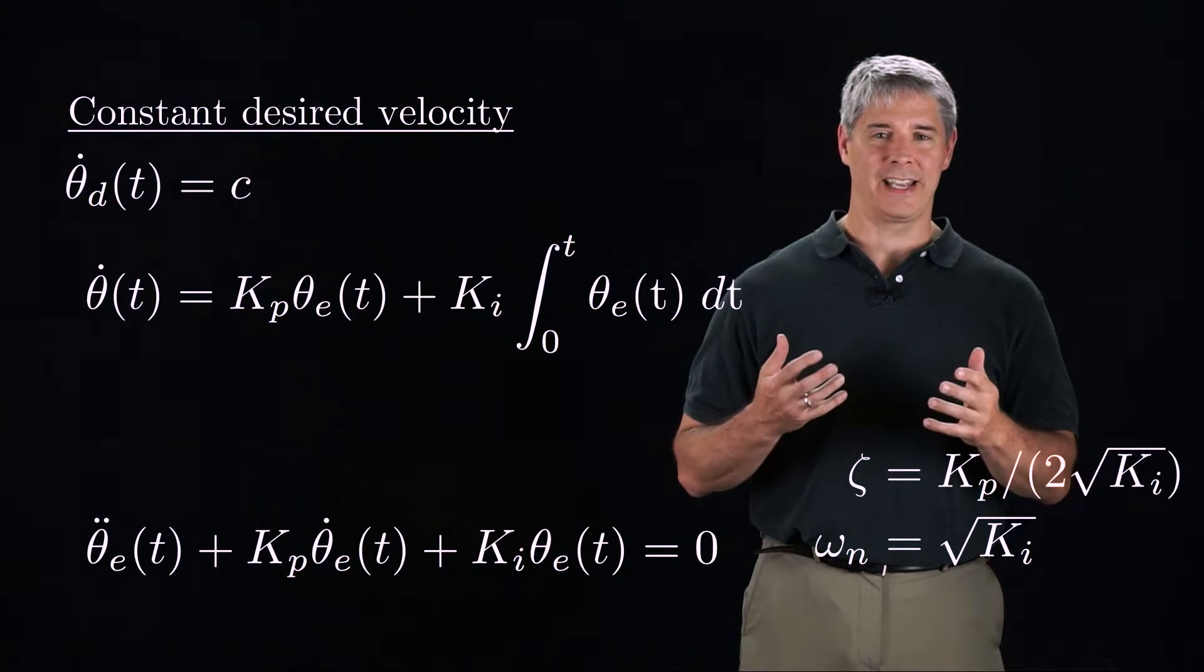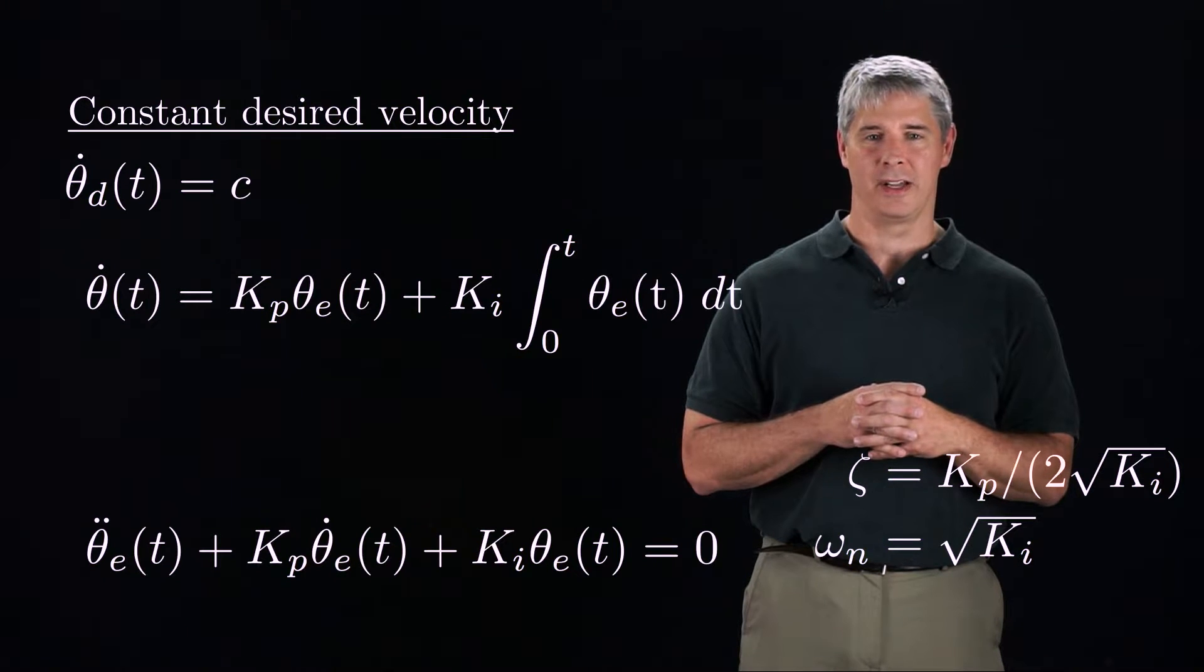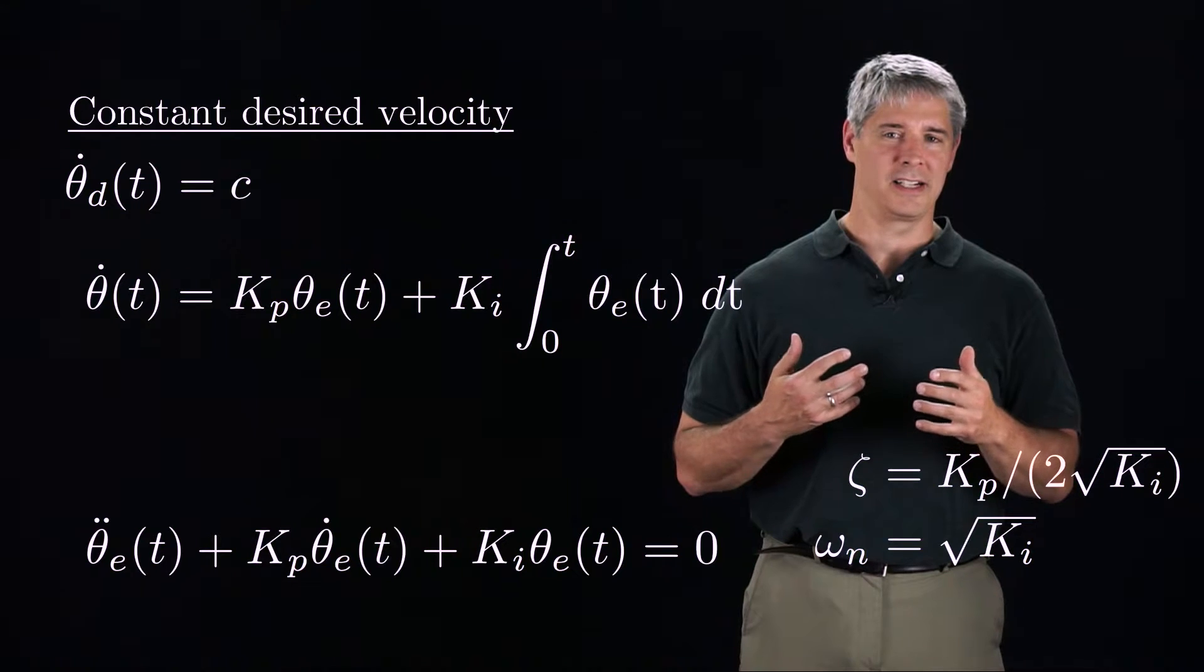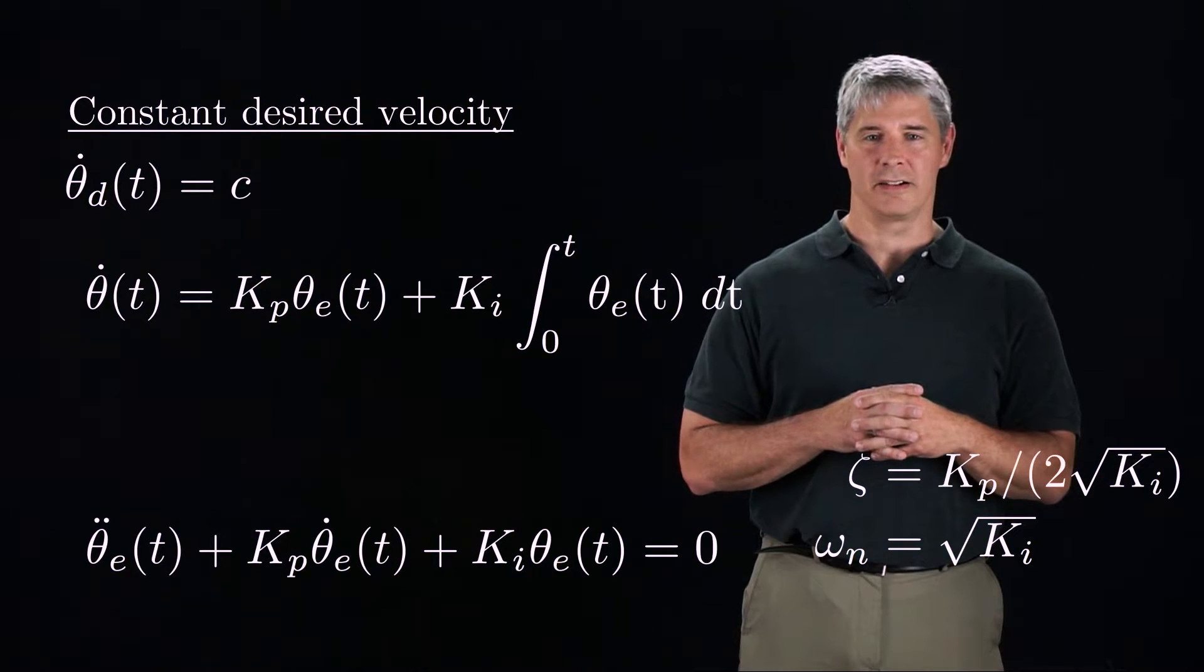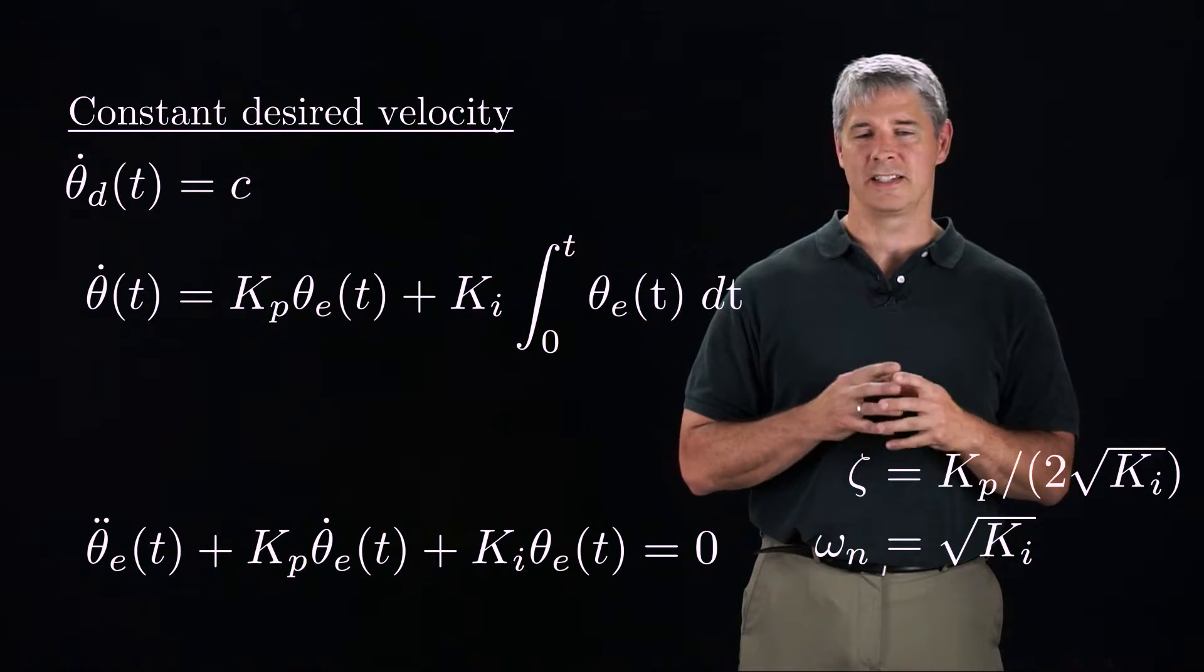If Ki and Kp are both positive, then the error dynamics are stable and the steady-state error is zero. In other words, the commanded velocity is non-zero when the error is zero because the integral of the error is not zero.